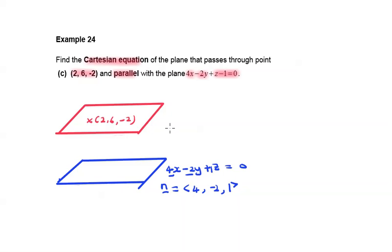And two parallel planes will share the same normal. This is the normal for the bottom plane and normal for the upper plane.